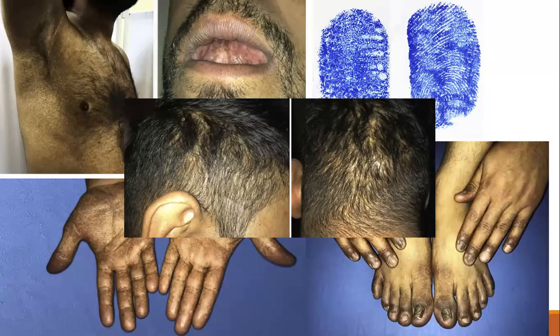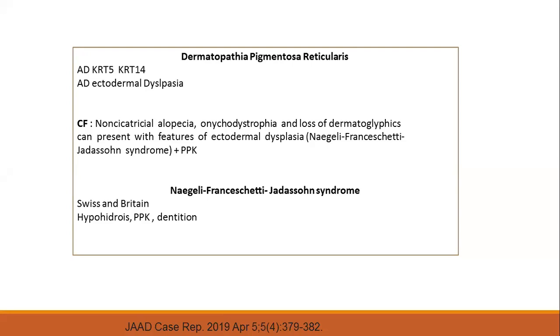Another condition: you have pigmentation of the palms through the body, a non-scarring alopecia. If you see the slide on top, you have a loss of dermatoglyphics from one of the thumbs, and of course nail defects. This particular conglomeration is seen classically in dermatopathia pigmentosa reticularis and also in NFJ syndrome. They usually overlap, but the classical dermatopathia is autosomal dominant, keratin-5/14 defect, and considered by many as just an ectodermal dysplasia. Important to know especially because of the hypohidrosis and the dentitional defects.